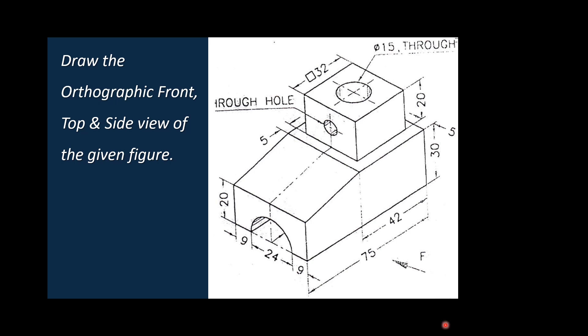We have a front view of the figure on one side. In the isometric projection, we have a minimum of three planes: front, top, and any of the side faces.